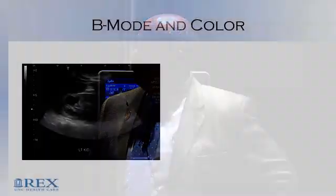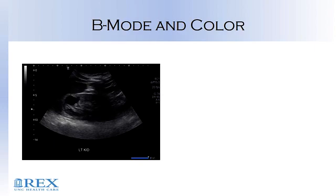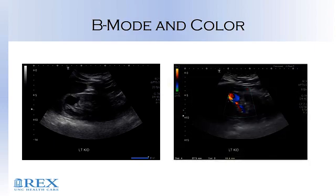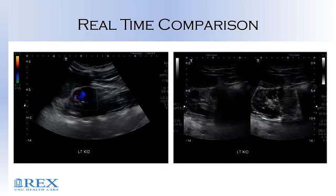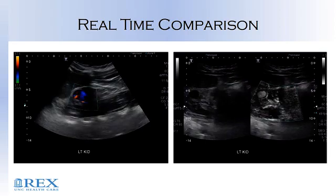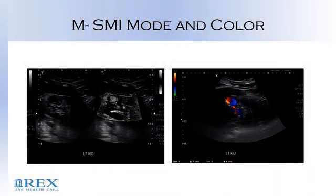Looking at this beautiful color image — just by hitting a button in real time — you can see the color flow within what we thought was a pseudoaneurysm. I don't have time to show the Doppler interrogation, but this is the difference of SMI. You can see the fine delineation of the vessels, and this turned out to be a mycotic renal artery aneurysm. It's very rare.